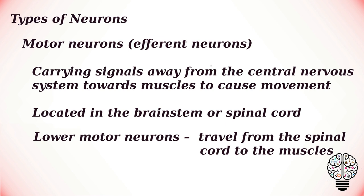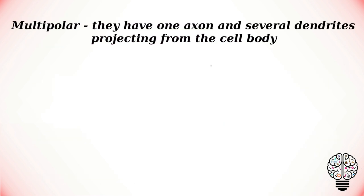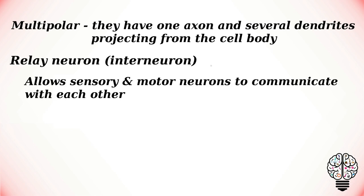There are two types of motor neurons: lower motor neurons, which travel from the spinal cord to the muscles of the body, and upper motor neurons, which travel between the brain and the spinal cord. Motor neurons are characterized as being multipolar, meaning they have one axon and several dendrites projecting from the cell body.